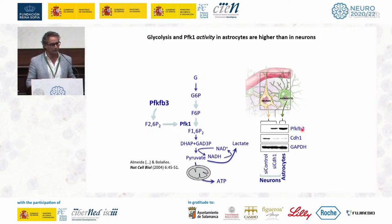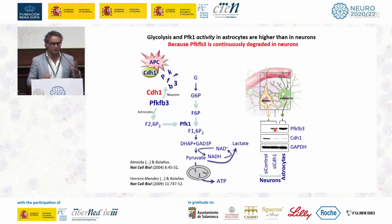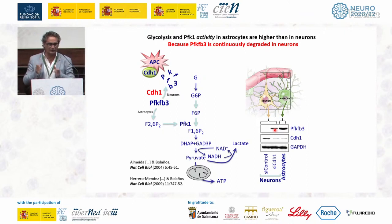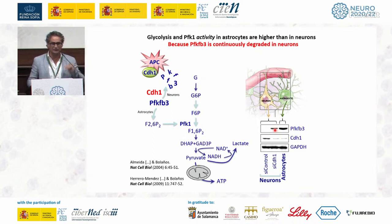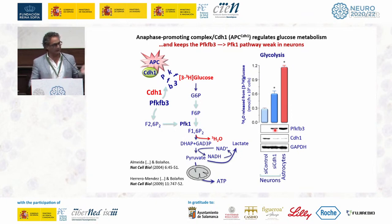If you remove CDH1 — a cofactor for the ubiquitin ligase APC/C-CDH1 — by silencing it, you can completely stabilize the PFKFB3 protein in neurons. In neurons, PFKFB3 is a key pro-glycolytic enzyme that regulates glycolysis by activating PFK1, but it is constantly degraded by APC/C-CDH1. In astrocytes, PFKFB3 is very abundant, accounting for their highly glycolytic phenotype. When you measure glycolysis, there is a perfect correlation between the level of PFKFB3 and the activity of the glycolytic pathway.